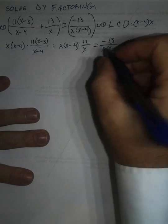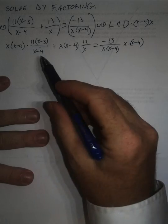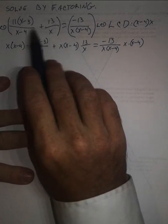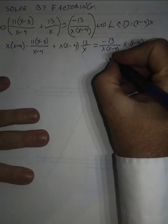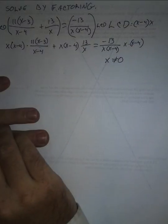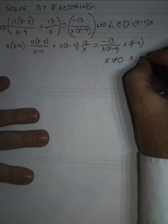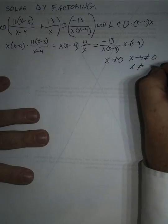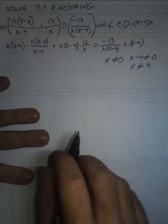Now, before I do any canceling, I need to note some domain restrictions, or x values that aren't allowed to solve the equation. We're not allowed to divide by 0 in our original equation. So we need to note that x can't be 0, and x minus 4 can't be 0, which means x can't be 4.